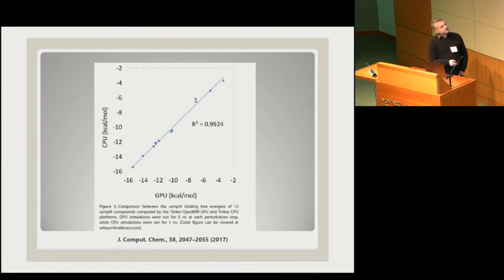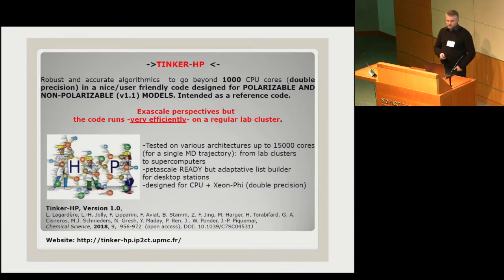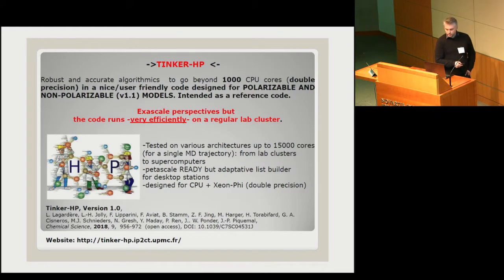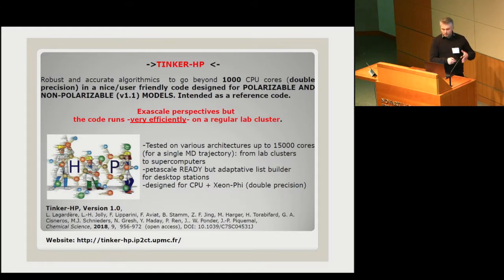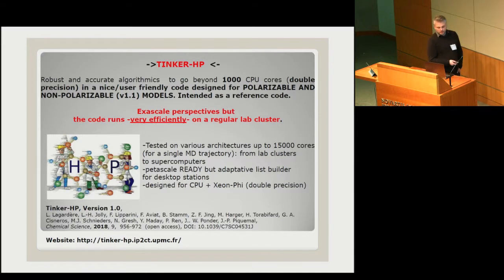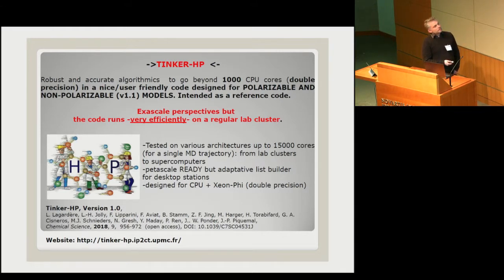If you want to use Tinker-OpenMM for free energy, particularly FEP-type calculations, it works very well and is pretty fast — a 200-fold speedup. But we have been trying to push this acceleration further, because we would also like to tackle free energies on really large systems. GPUs are great but have limited memory, so the idea was to design an extended version of Tinker called Tinker-HP that will scale across a lot more computational resources, including lab clusters.